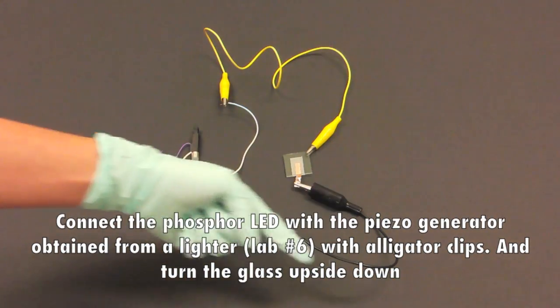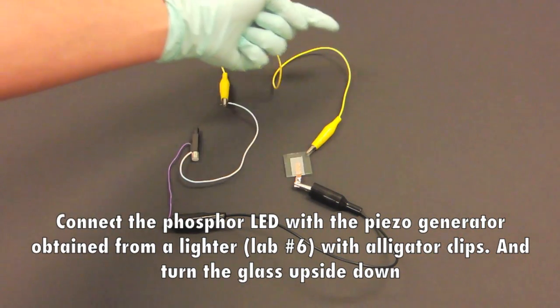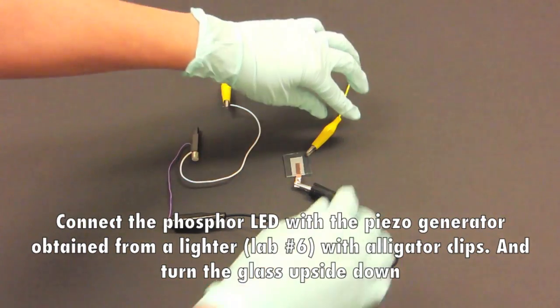Connect the phosphor LED with a piezo generator obtained from a lighter with alligator clips, and turn the glass upside down.